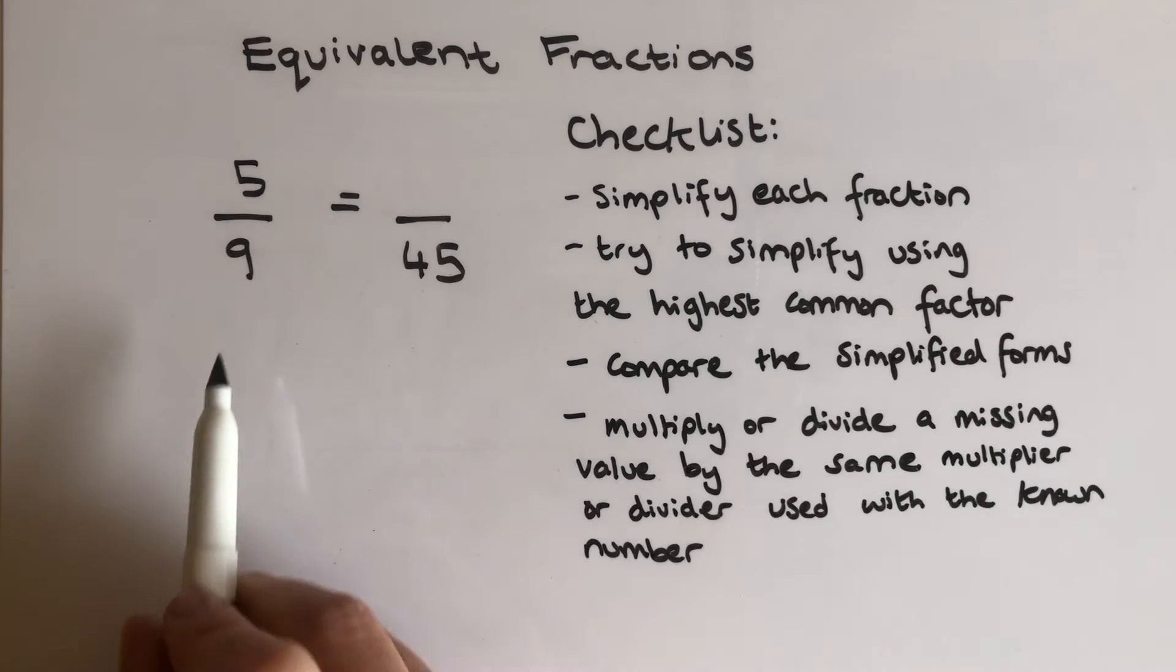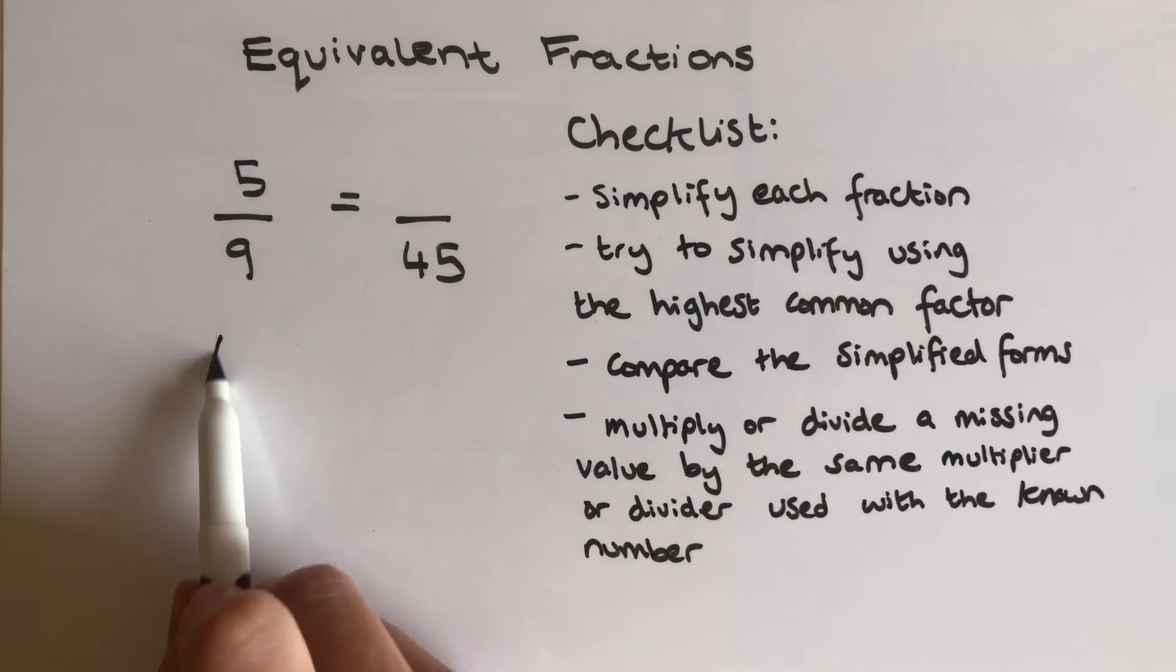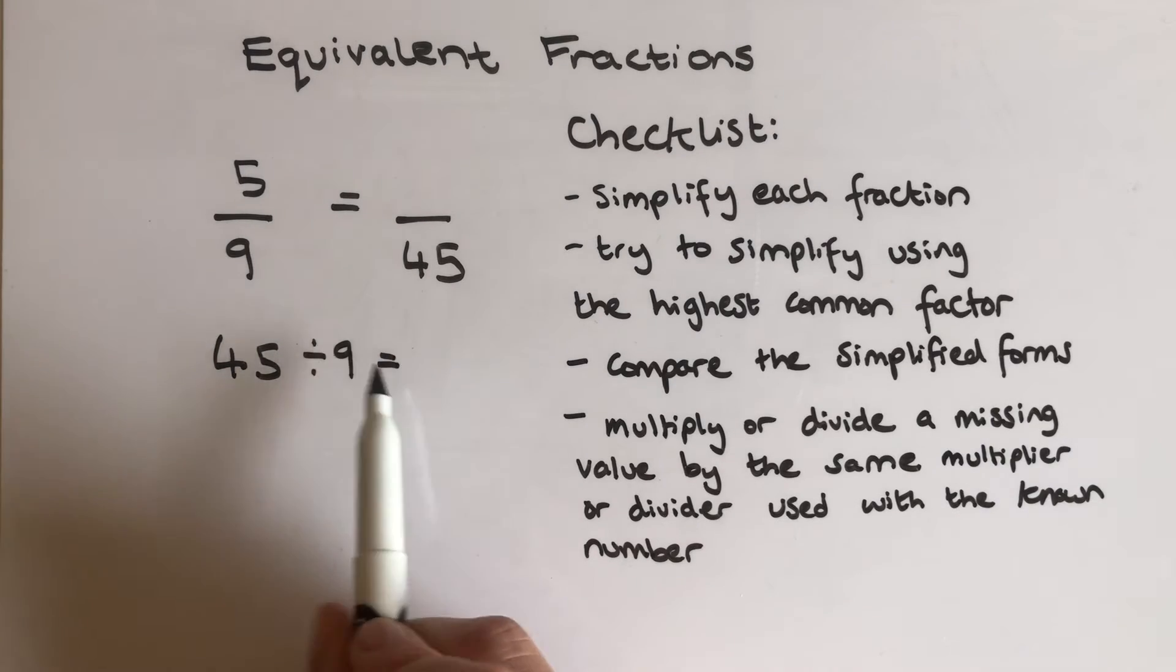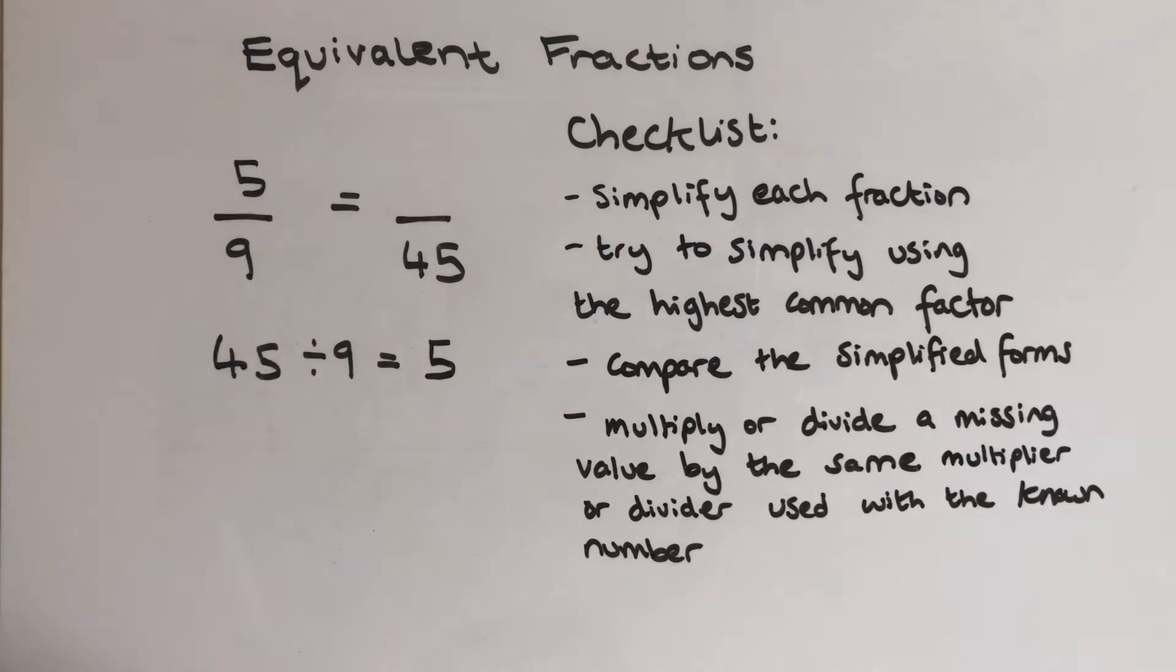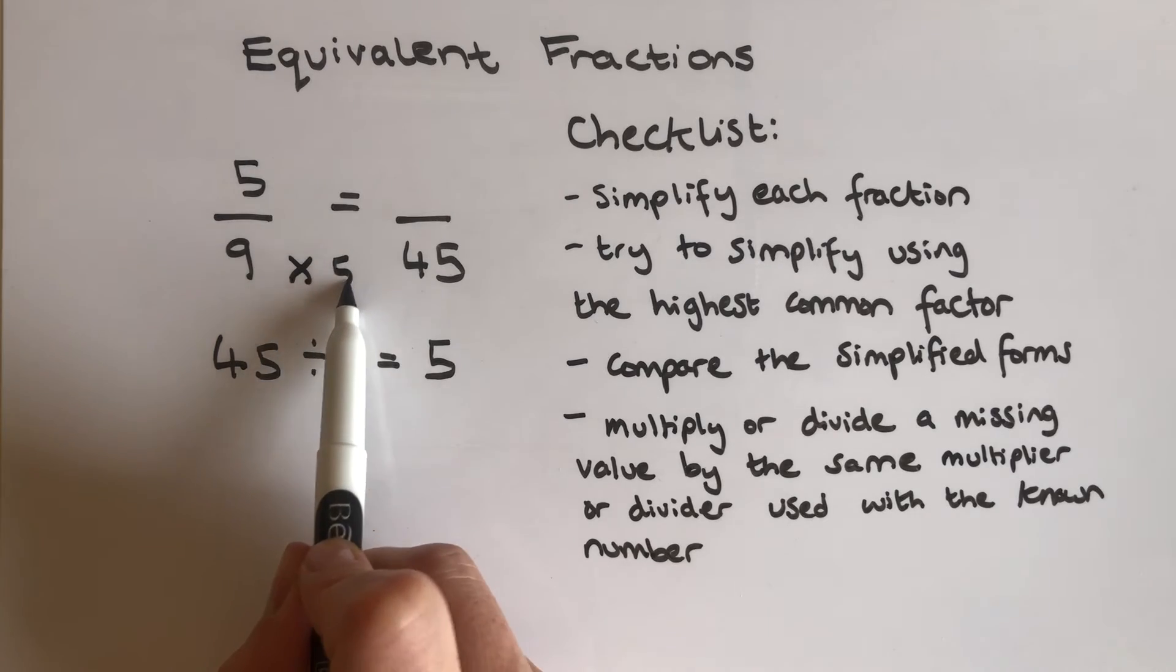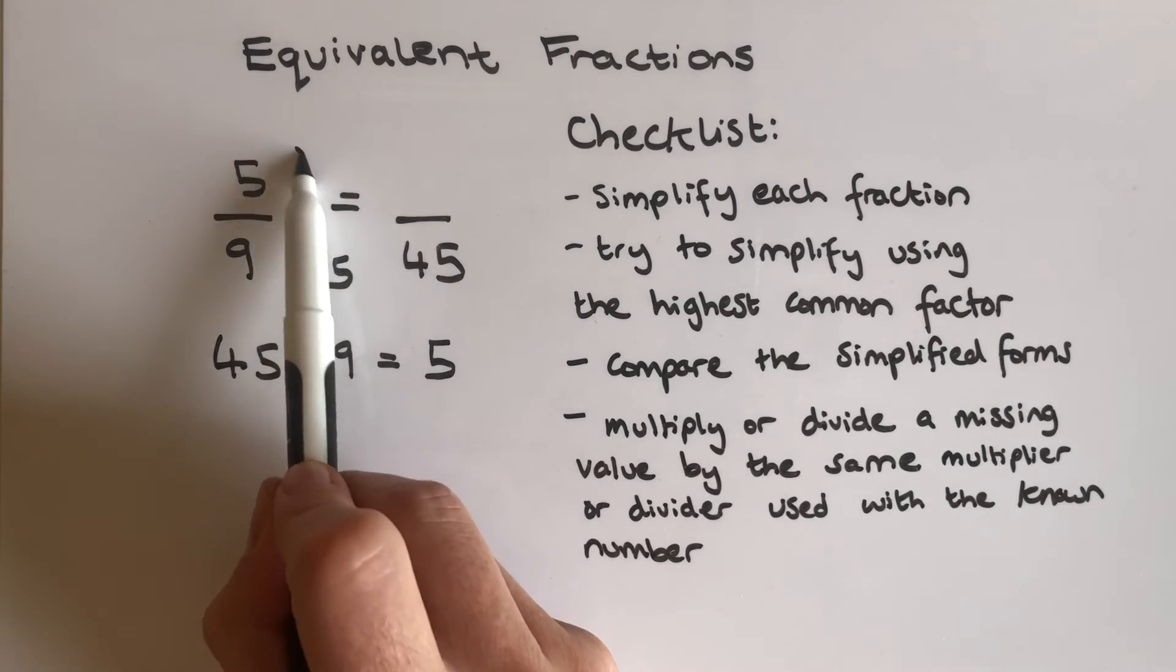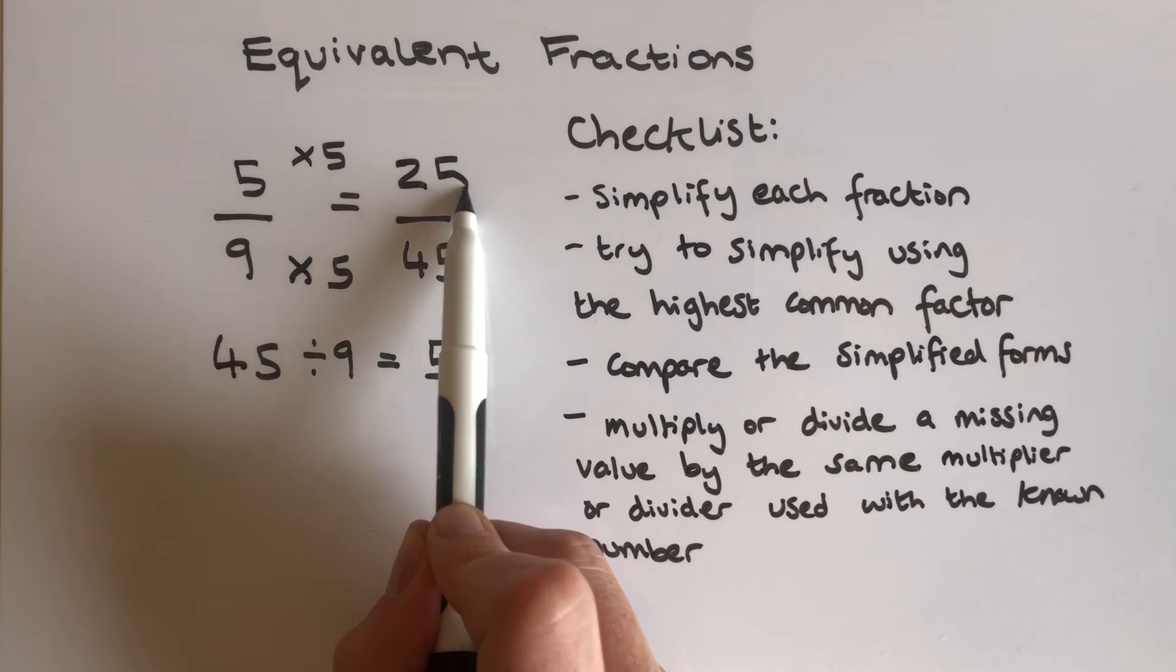So for example, let's see what this gap is here. What did I have to multiply 9 by to get up to 45? So 45 divided by 9 tells me that number that's in that gap there is 5. And then the number is getting bigger, 9 up to 45. So I had to multiply it, I didn't divide it, to get up to 45. So I now use that multiplier used for that known number for my missing value. 5 multiplied by 5 equals 25.